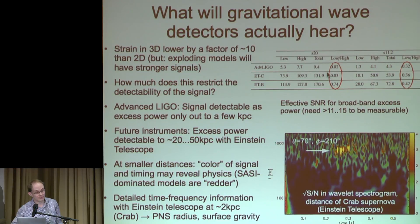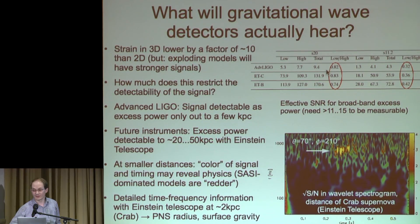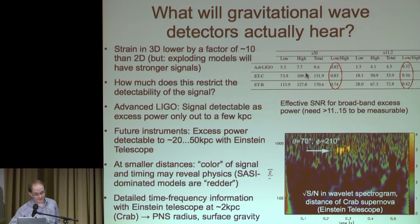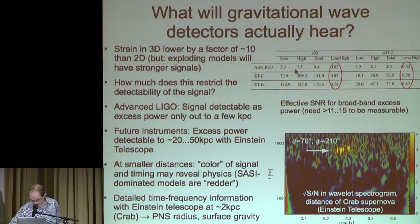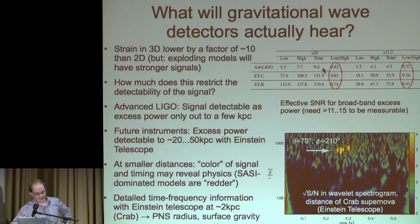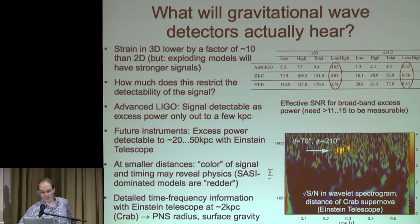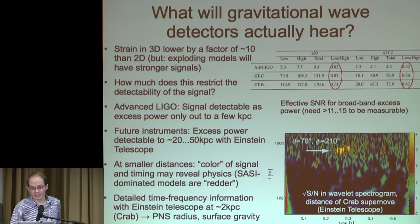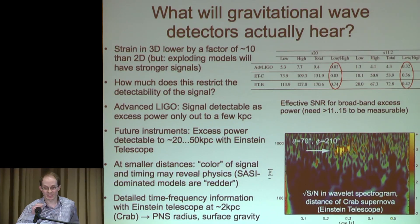The numbers for two different progenitors parametrize the excess power during the first second of a supernova — pinpointable from the neutrino signal received simultaneously. You'd need a signal-to-noise ratio of about 12–15, and you only get that for a massive 20-solar-mass progenitor in our recent study. But with third-generation instruments like the planned Einstein Telescope, things would look quite different, and you would actually be able to see reasonable supernova gravitational wave signals throughout our galaxy with a clear detection.